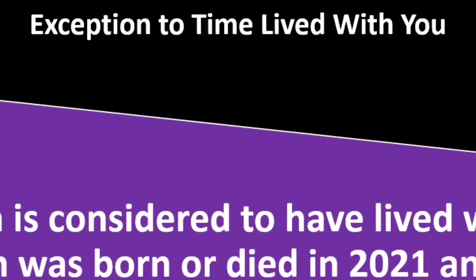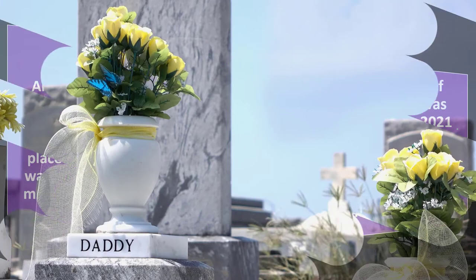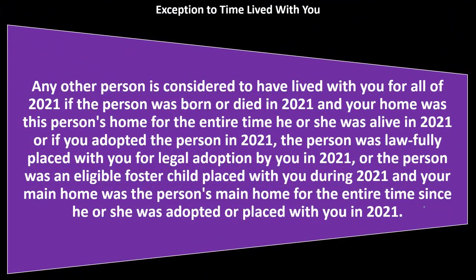Exception to the time lived with you rule continued: any other person is considered to have lived with you for all of 2021 if the person was born or died in 2021 and your home was the person's home for the entire time he or she was alive. You can see these gray areas happening — what happens if someone died, and so on — so they fill in the gaps. Similarly, if you adopted the person in 2021, the person was lawfully placed with you for legal adoption in 2021, or the person was an eligible foster child placed with you during 2021, your main home was their main home for the entire time since adoption or placement in 2021.